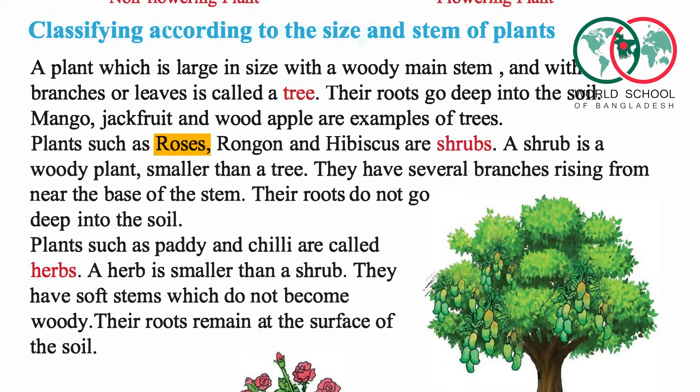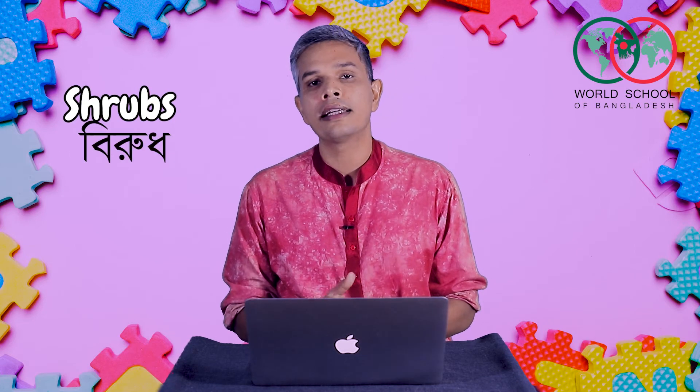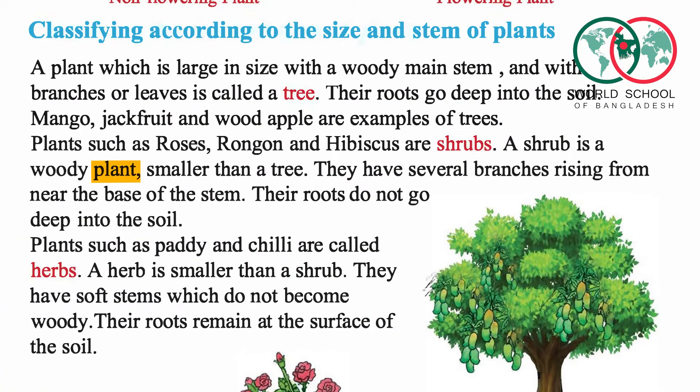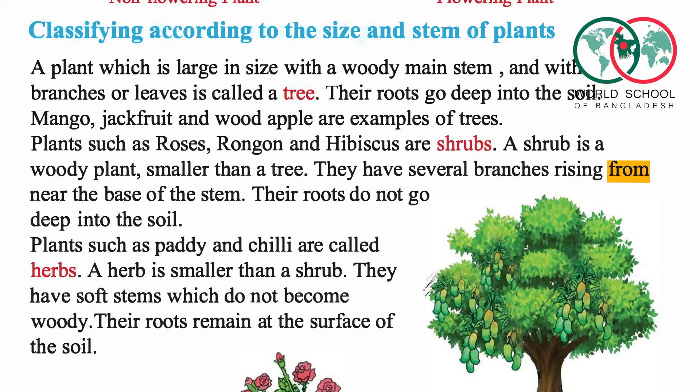Plants such as roses, rangoon and hibiscus are shrubs. A shrub is a woody plant, smaller than a tree. In Bangla we call it 'birut'. They have several branches rising from near the base of the stem. Their roots do not go deep into the soil.